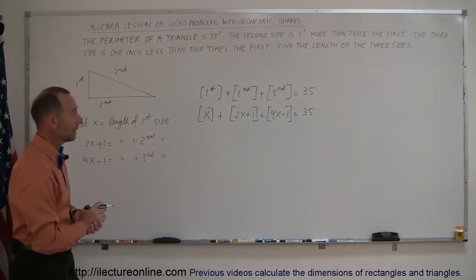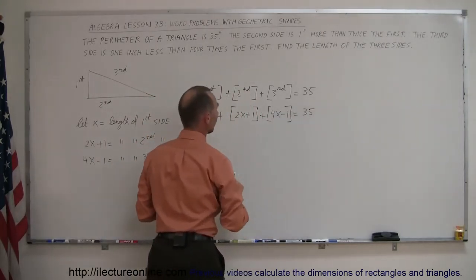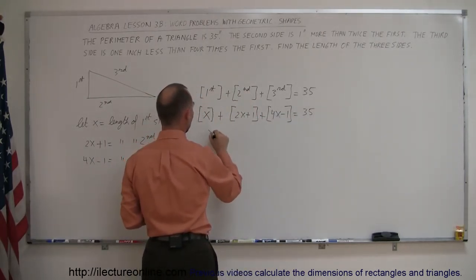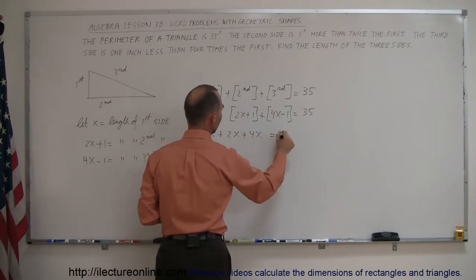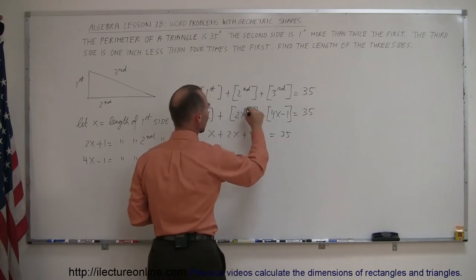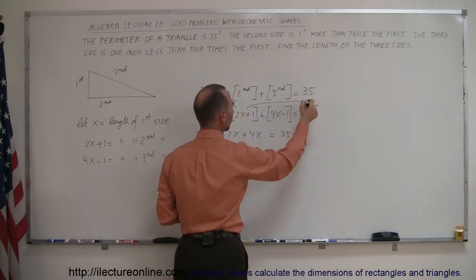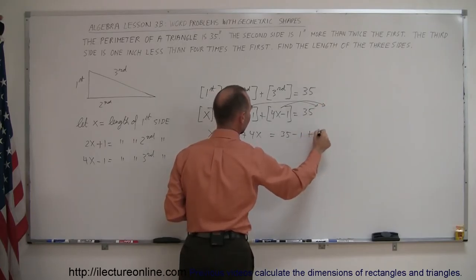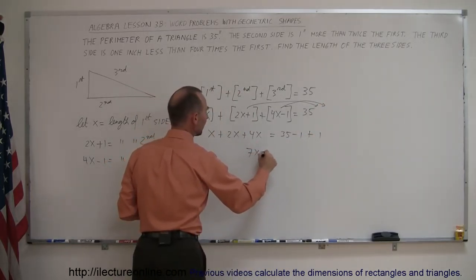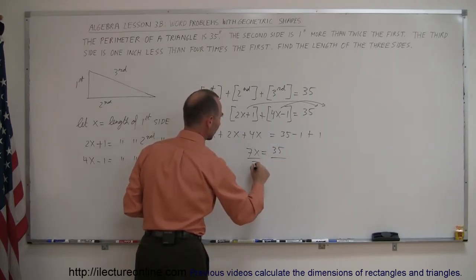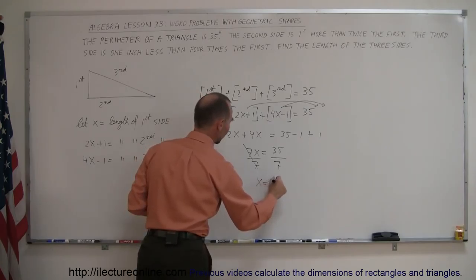We leave all the x terms on one side and move the numbers to the other. We have x plus 2x plus 4x on the left. The plus 1 moves across to become minus 1, and the minus 1 moves across to become plus 1, giving us 7x equals 35. Dividing both sides by 7, x equals 5.